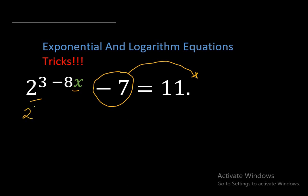So 2 raised to the power of 3 minus 8x equal to 11 plus 7. So 2 raised to the power of 3 minus 8x will give me 18.